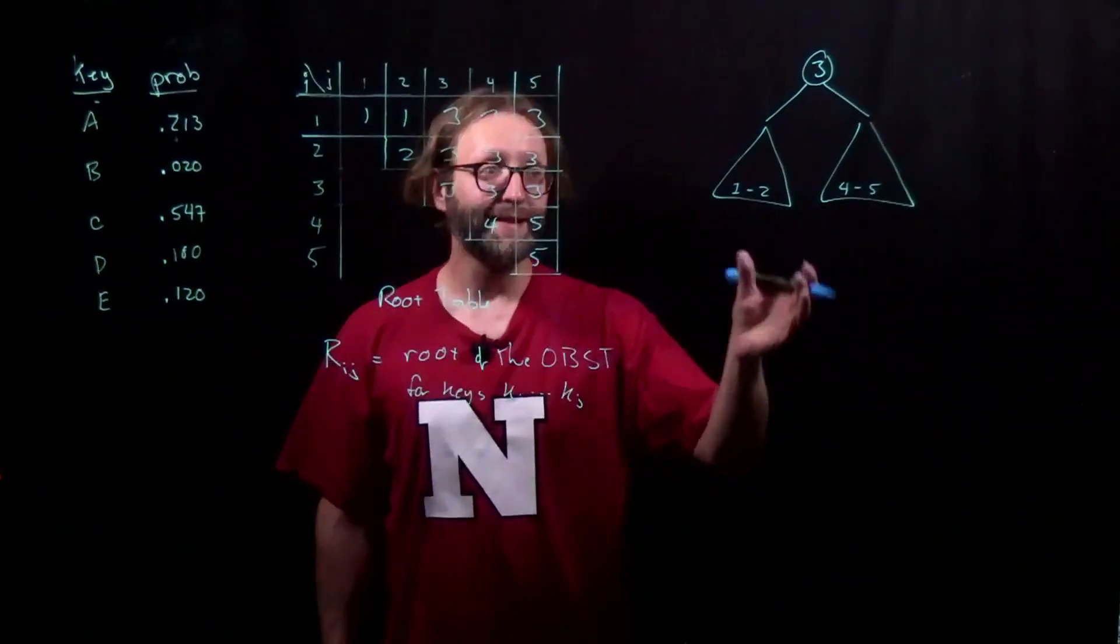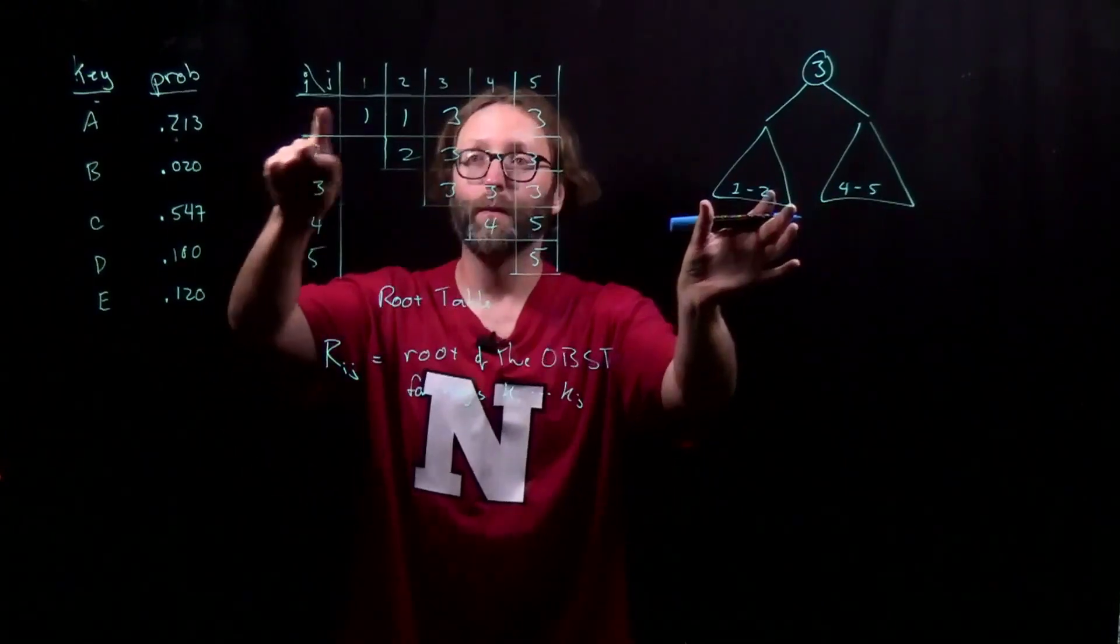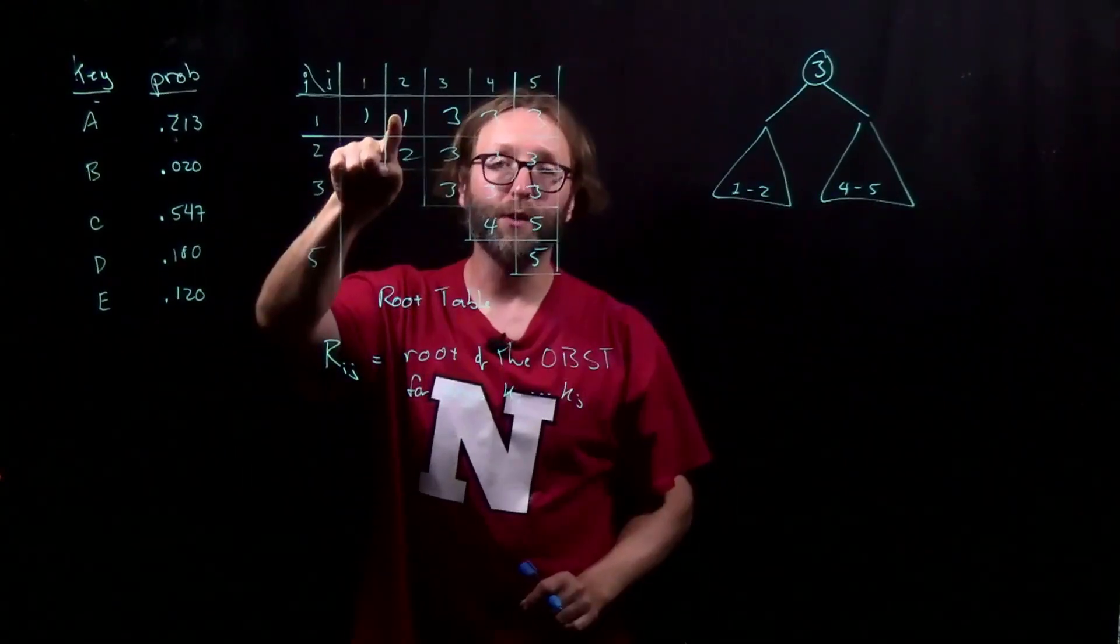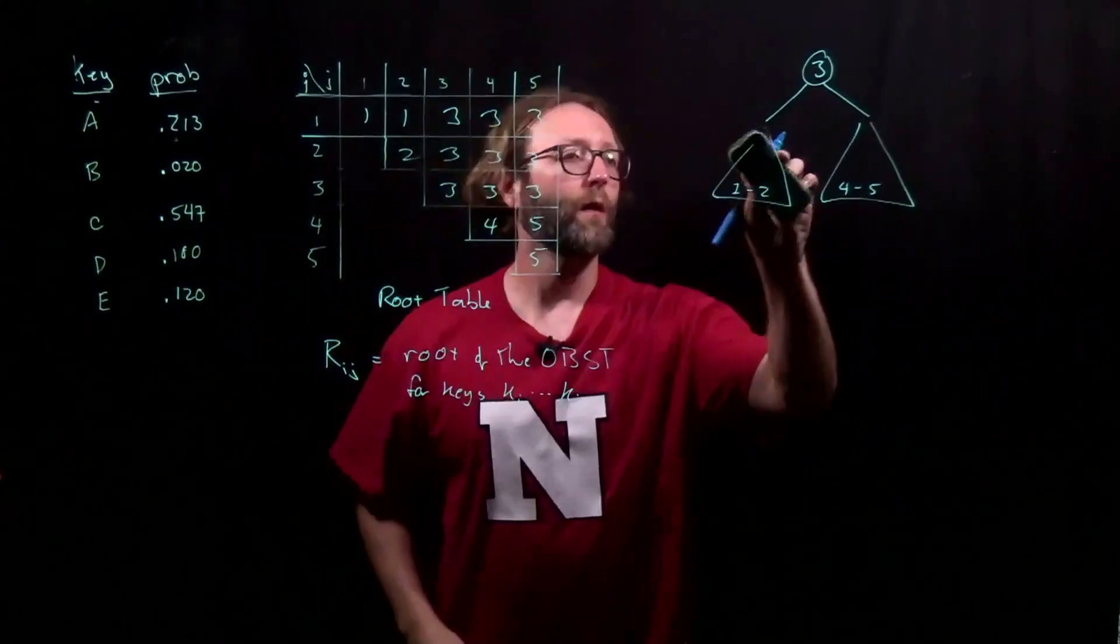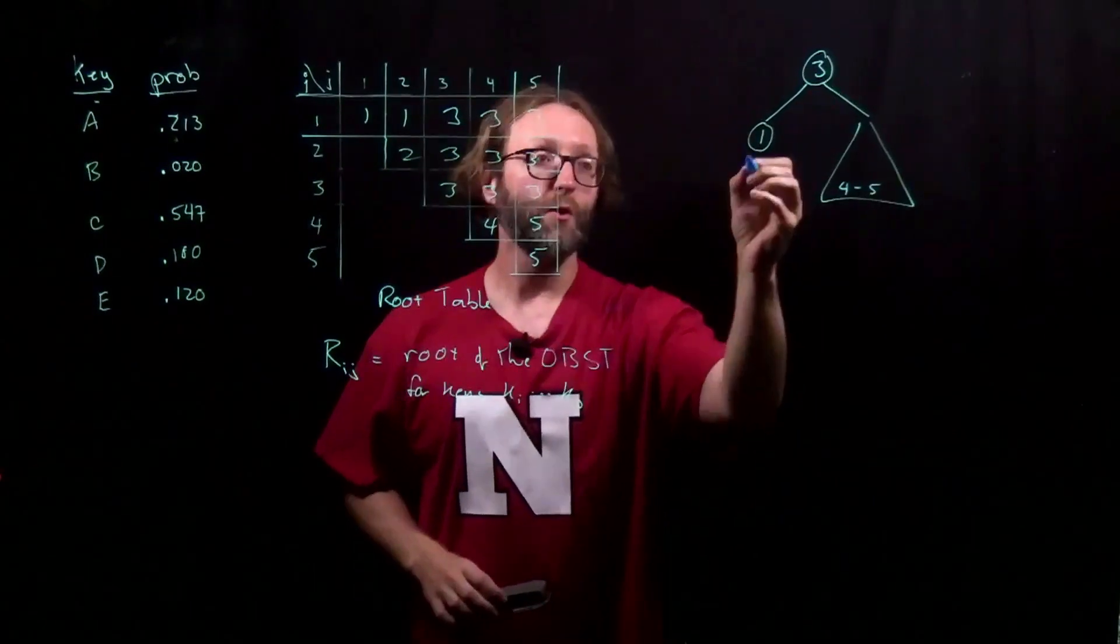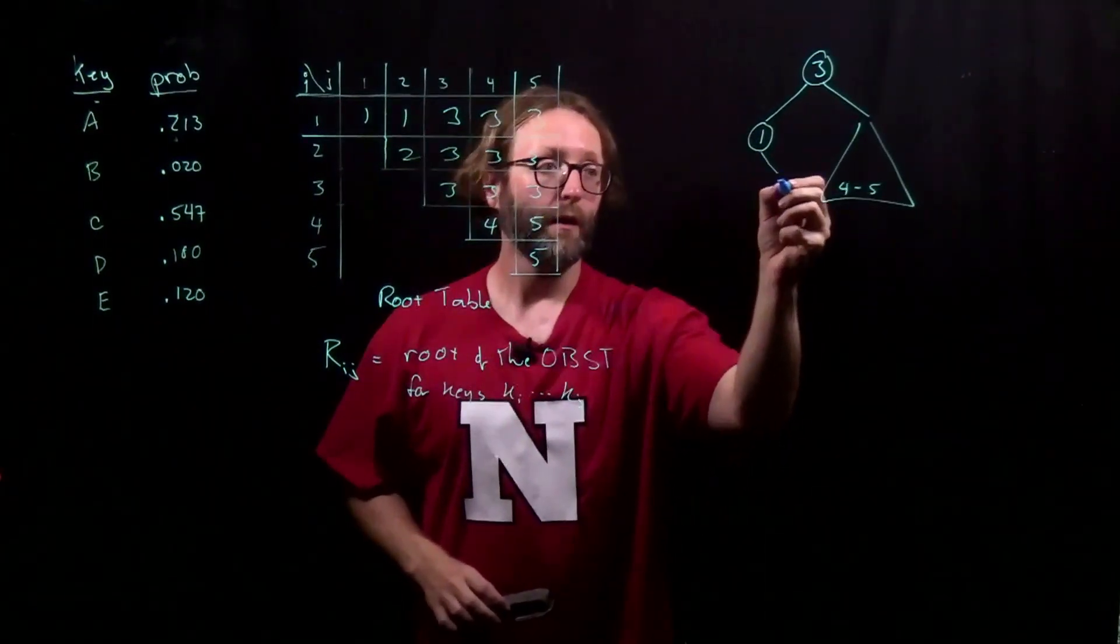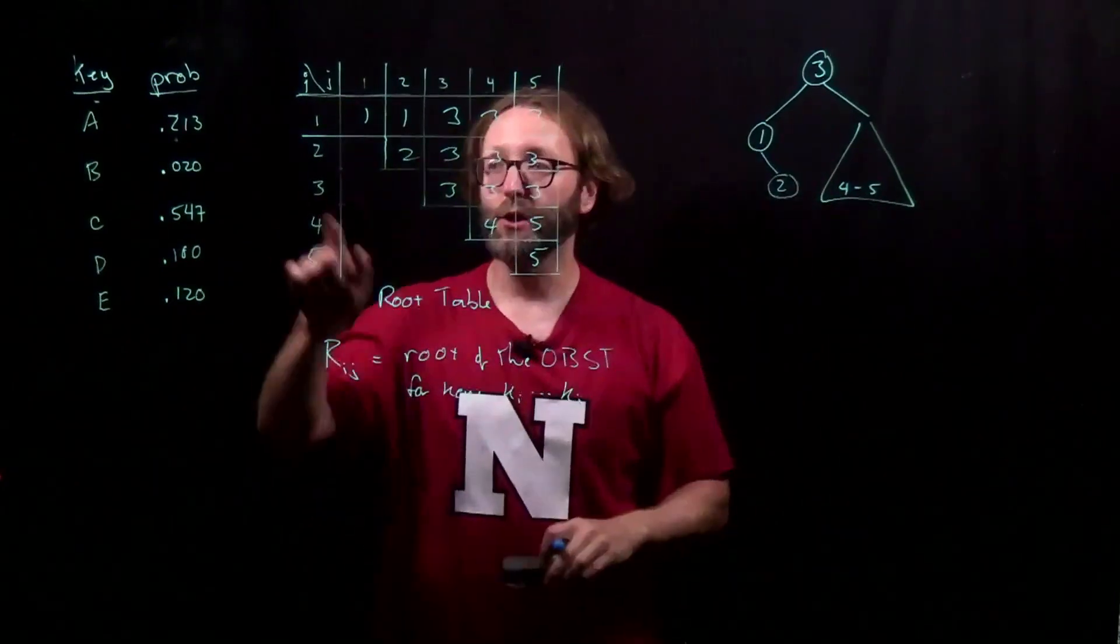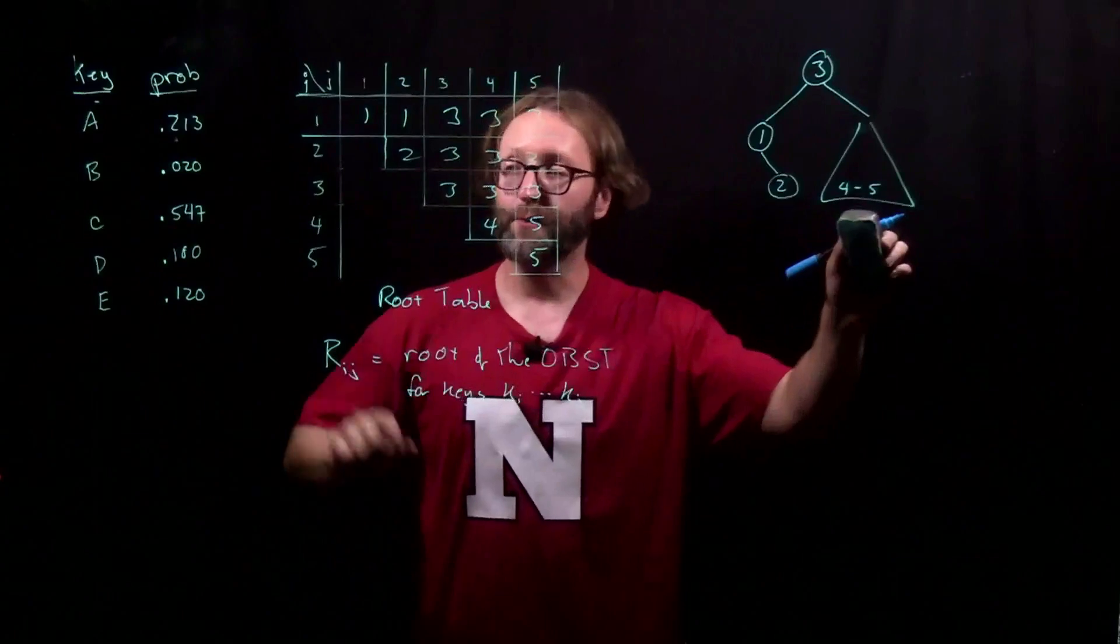Now I can recursively ask the same question but for keys 1 through 2. Here it says that 1 should be the root of this subtree. When we do that, there are no more keys left for the left subtree and 2 will be its own root.